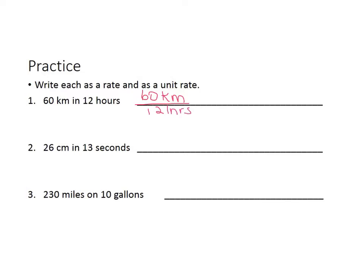Now it's very important when you write out the rates that you also write out the labels so that you can see 60 what and 12 what. Now to use it as a unit rate we would need to take 60 divided by 12, and 60 goes into 12 five times. So as a unit rate, we would write it as 5 kilometers per every one hour.